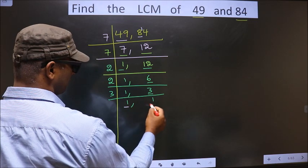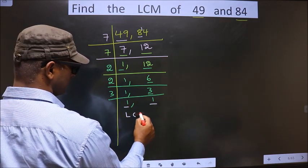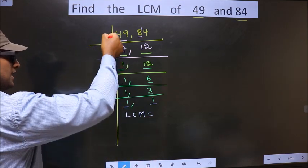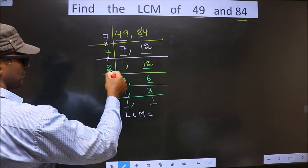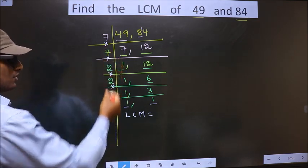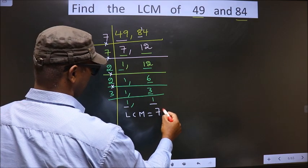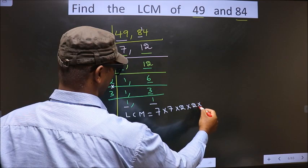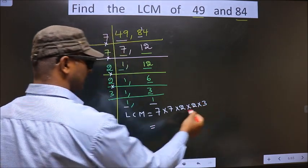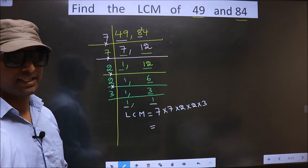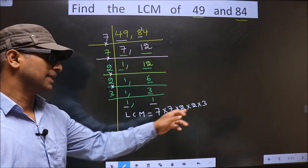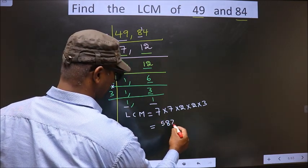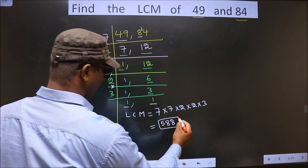So, now we got 1 in both the places. Now our LCM is the product of these numbers. That is 7 into 7 into 2 into 2 into 3. Multiply all these numbers, that will be the LCM. You multiply all these numbers, you get 588. This is your LCM.